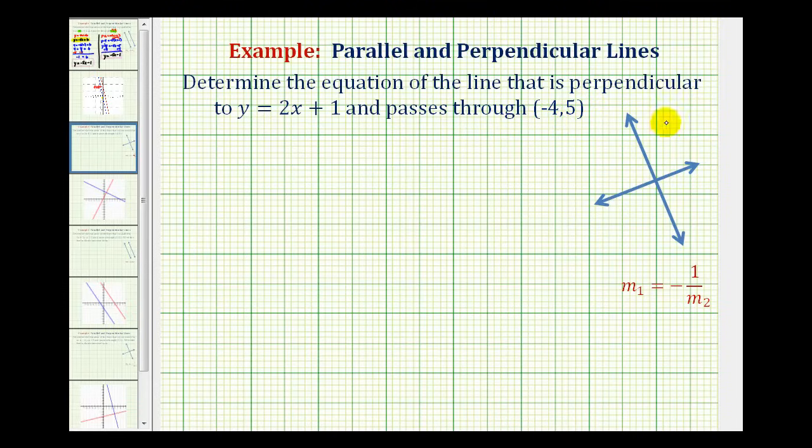If two lines are perpendicular, that means they intersect and form a right angle or a 90 degree angle. And if two lines are perpendicular, then their slopes are negative reciprocals of one another, which can be written using this notation here.